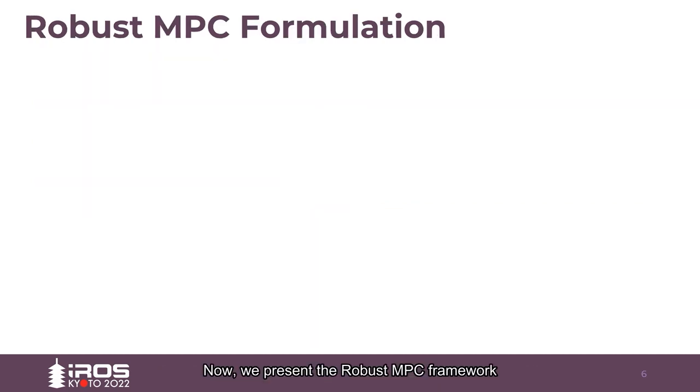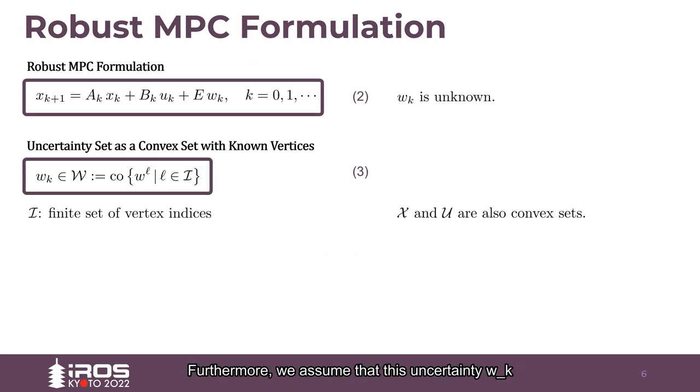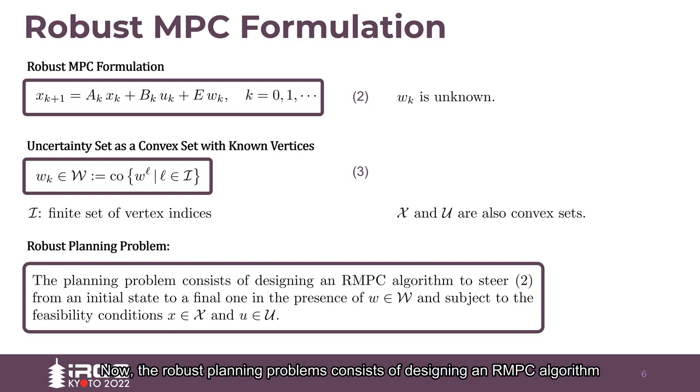Now, we present the robust MPC framework. In this framework, we consider the linear time-varying dynamics with an additive uncertainty. Furthermore, we assume that this uncertainty, omega k, belongs to a convex uncertainty set. Now, the robust planning problem consists of designing an RMPC algorithm to steer the LTV system from an initial state to a final state in the presence of uncertainties, while respecting state and control feasibility conditions.